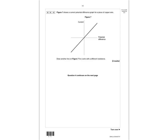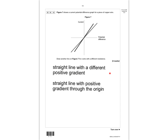Question 4.4: figure 7 shows a current–potential difference graph for a piece of copper wire. The IV graph is a straight line going through the origin. You need to draw another line on figure 7 for a wire with a different resistance. The line must go through the origin with a different positive gradient — starting in the same quadrants as the original. That straight line with a positive gradient through the origin gets you two marks.